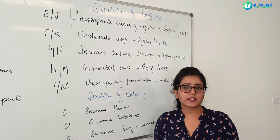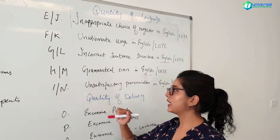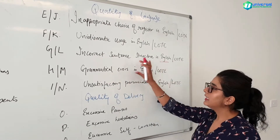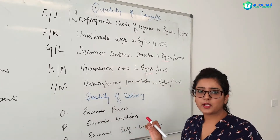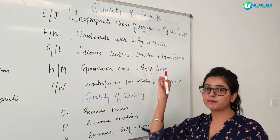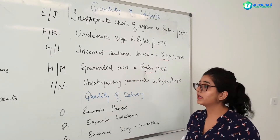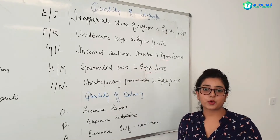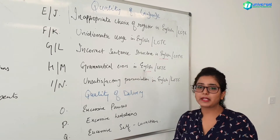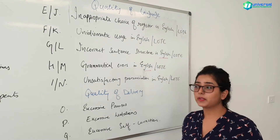Codes G and L cover incorrect sentence structure in English and the language other than English, and codes H and M cover grammatical errors in both languages. These two codes are actually very important and a lot of students don't pay attention to them. Many Punjabi students struggle with sentence structure and grammatical errors in English, while Hindi students struggle with forming sentences and have grammatical errors in Hindi itself. You need to really pay attention to these errors if you make them in your speech.